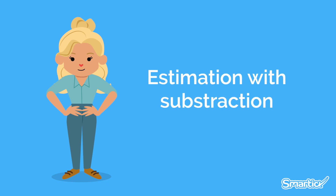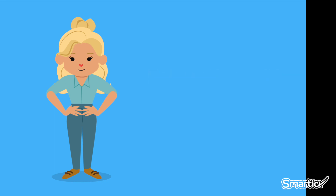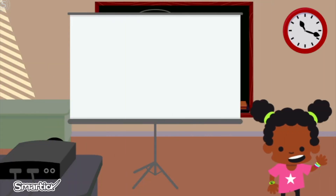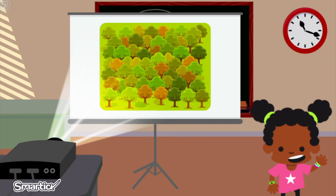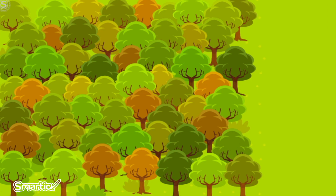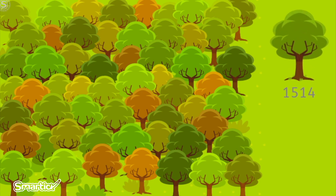Estimation with Subtraction. Zoe is going to do a project for her natural sciences class. She decided to do it on a wonderful forest that is close to her house. When she was looking for the amount of trees currently in the forest, she only found the following information: on a website from three years ago, she read that an environmental association registered 1,514 trees.